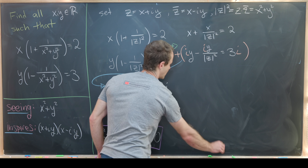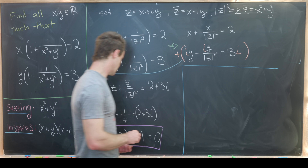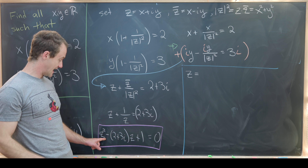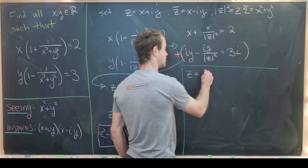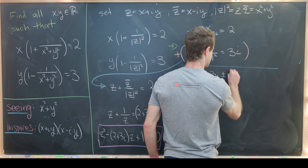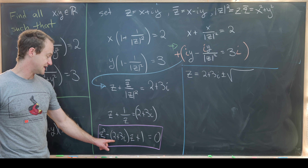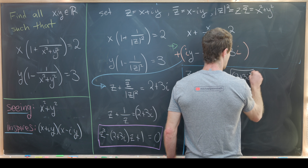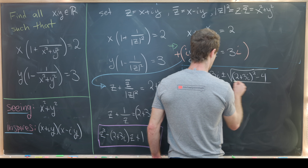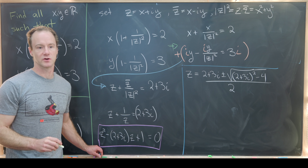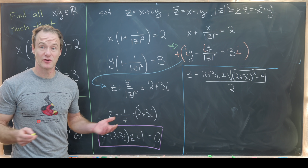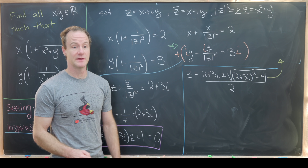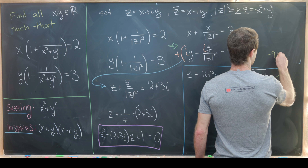We'll use the quadratic formula. So z equals (2 + 3i) ± √((2 + 3i)² − 4), all over 2. The interior of the square root simplifies by standard arithmetic of complex numbers. I'll leave that simplification as a homework exercise.